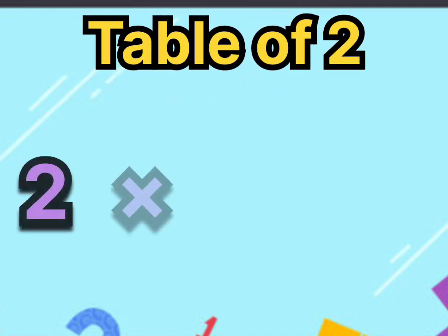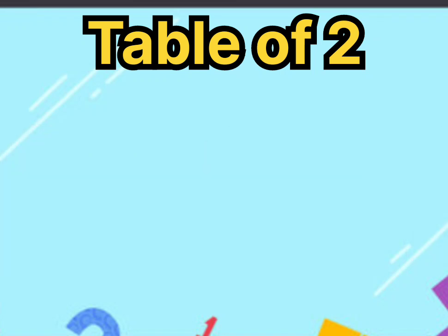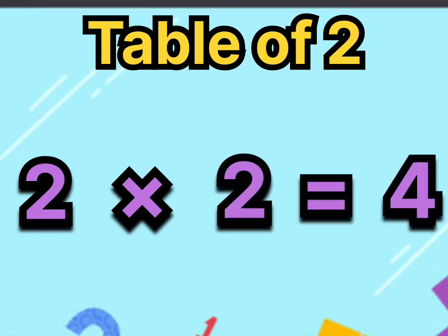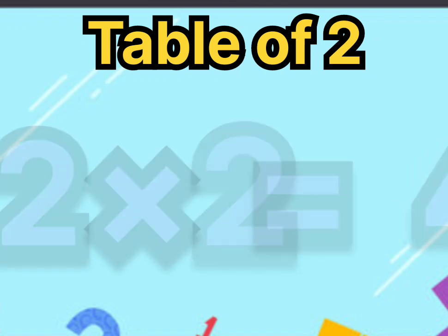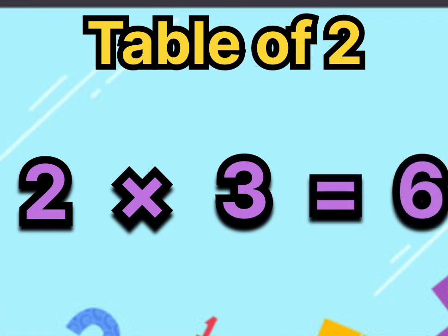Two ones are two. Say it again, two ones are two. Two twos are four. Say it again, two twos are four. Two threes are six. Say it again, two threes are six.